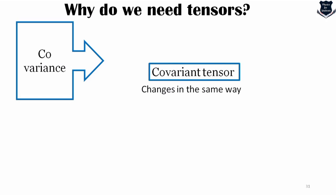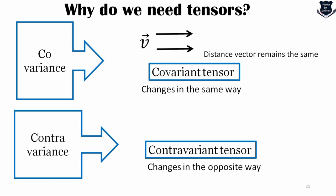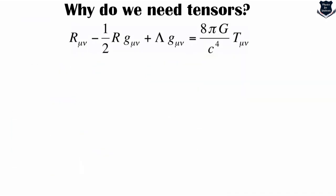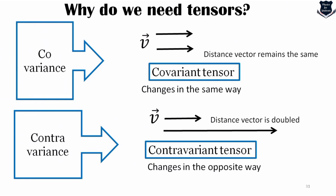In a covariant tensor, things change in the same direction — the distance vector remains the same. Contravariant means contra — opposite direction — the distance might be doubled. Whatever happens, we form tensors so that we can understand how things are changing. Any mathematical entity that is invariant under rotation of coordinates is called a tensor. This is in very brief — I have a totally separate video on tensors in general relativity which you can check in my playlist.